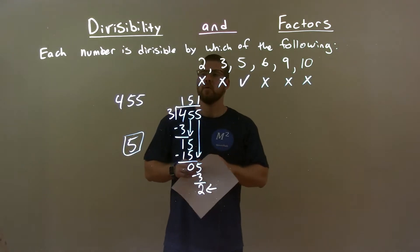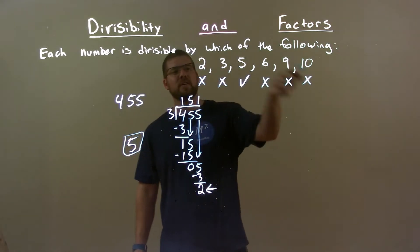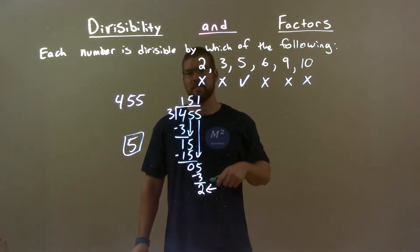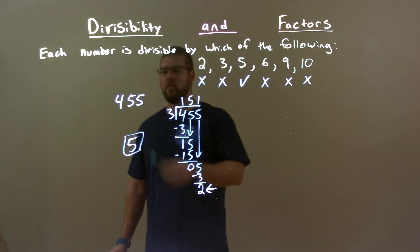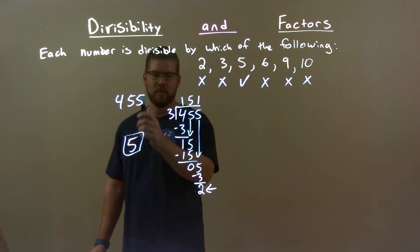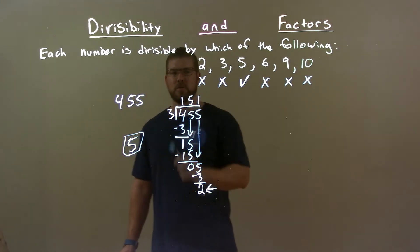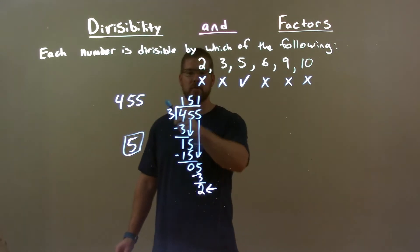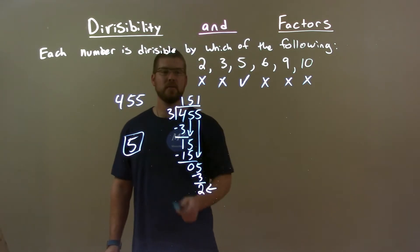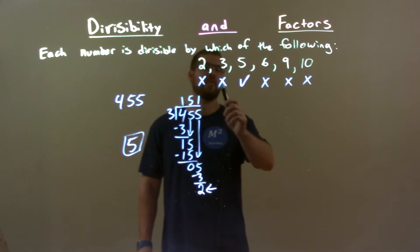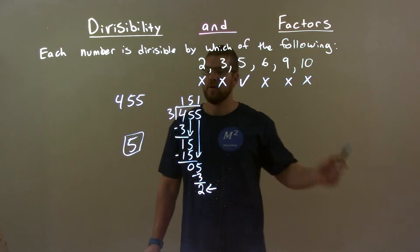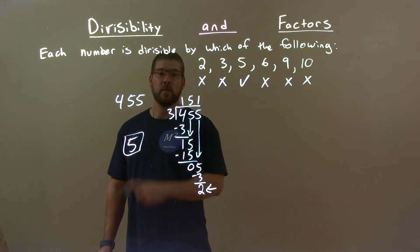Quick recap. We're given 455 and we have to see if these numbers go in. Even numbers are all out because this number is not even. 5 works because 5 is our ending number right here. We did long division with 3, got a remainder of 2, so 3 is out. And always, if 3 is out, 9 is going to be out because 3 goes into 9. So our final answer is just 5.